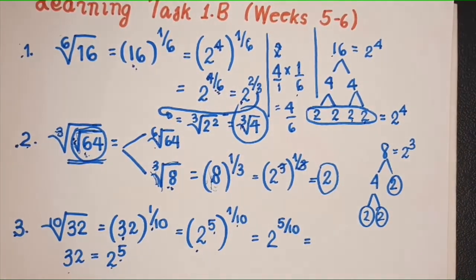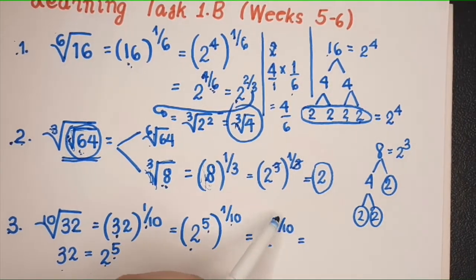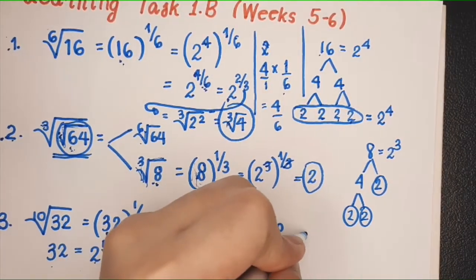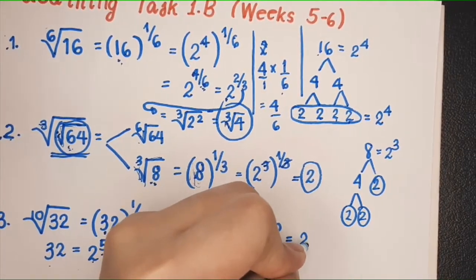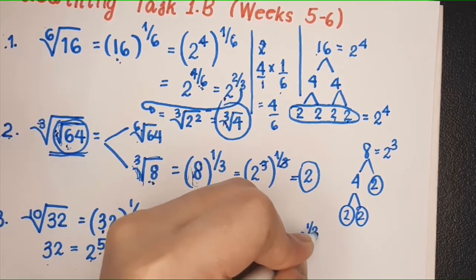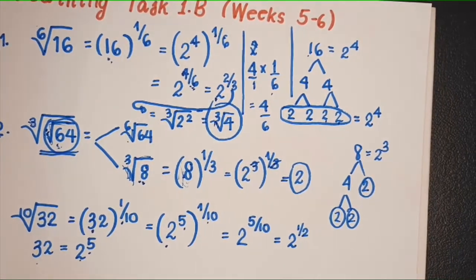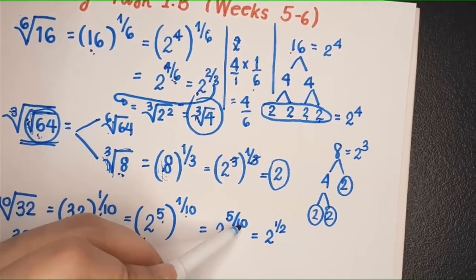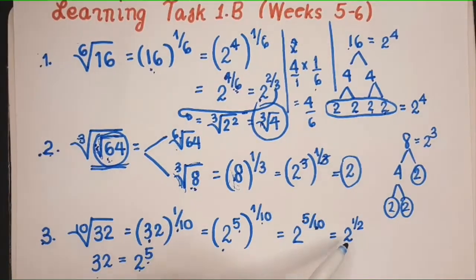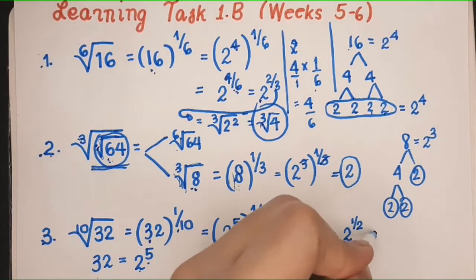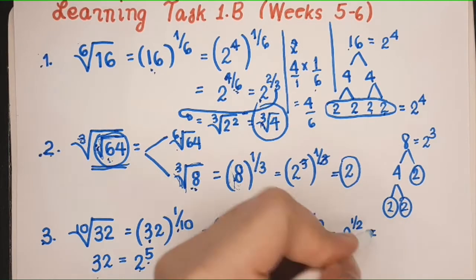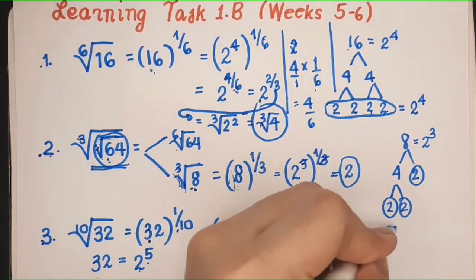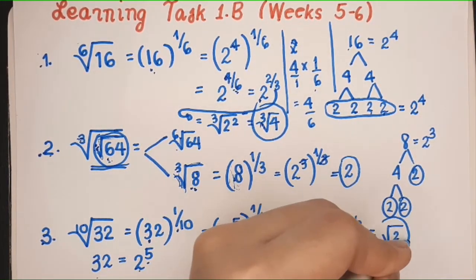Simplify 5 over 10 by dividing by 5 — this is equal to 2 raised to 1 half. If you want to write this in radical form, this is equal to the square root of 2.